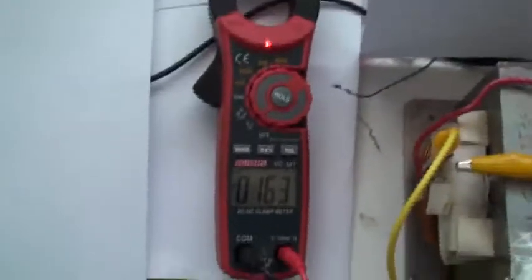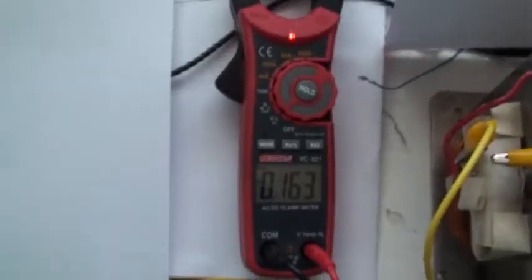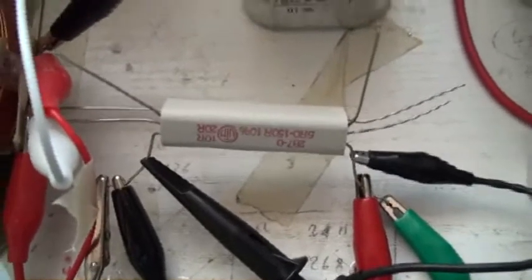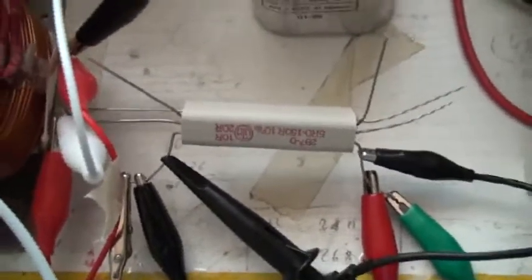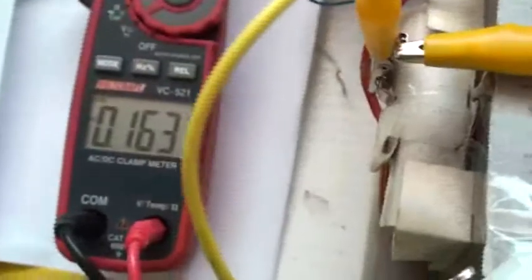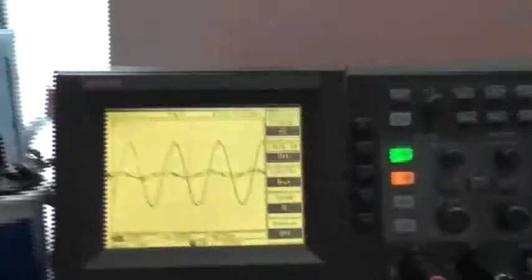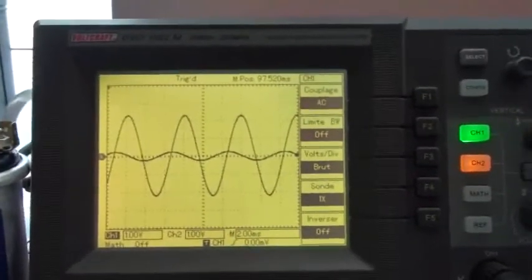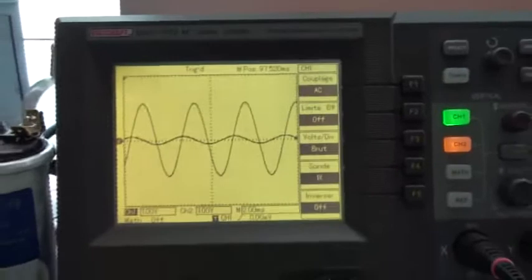And to confirm that the current is effectively decreased, I have also connected this voltmeter here through this 10 ohm resistor. So I can have an image of the current on the voltmeter. Exactly the same as we get the current on the oscilloscope. This is a small wave - this is current, and the big wave is the voltage.